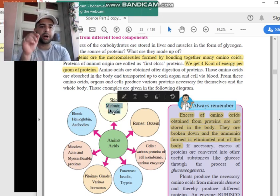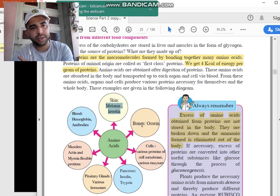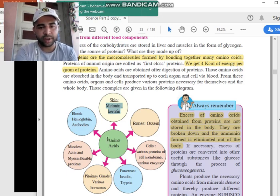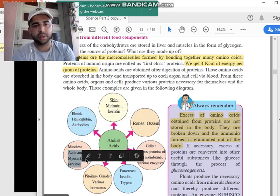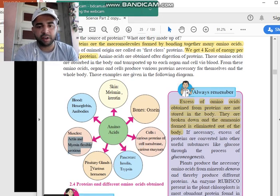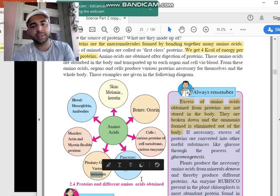If these amino acids reach your skin, then they will be converted into protein called melanin and keratin, the upper part of your skin. If these amino acids reach your bones, then they convert themselves into protein called ossein, which your bone is made up of. Similarly, if these amino acids reach your blood, it will be converted into hemoglobin and antibodies. If they go to the muscles, actin and myosin, flexible proteins which muscles are made up of. And if they go to the various glands, the pituitary gland, they will be converted into various hormones.